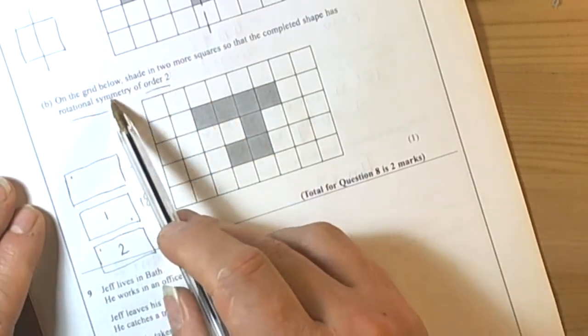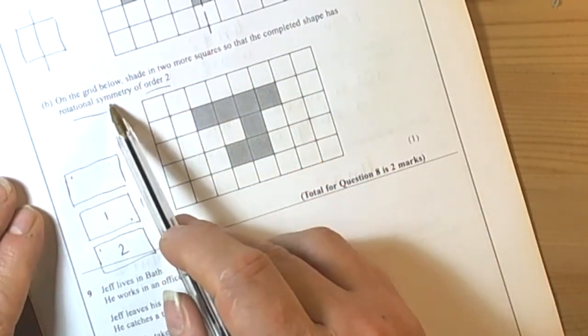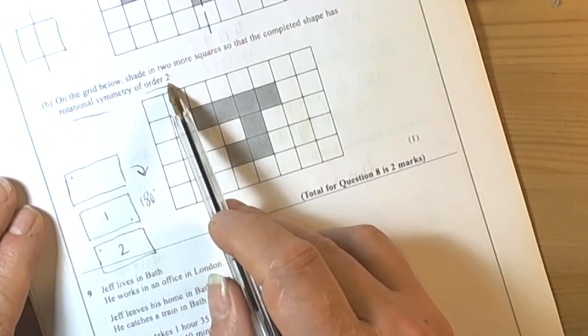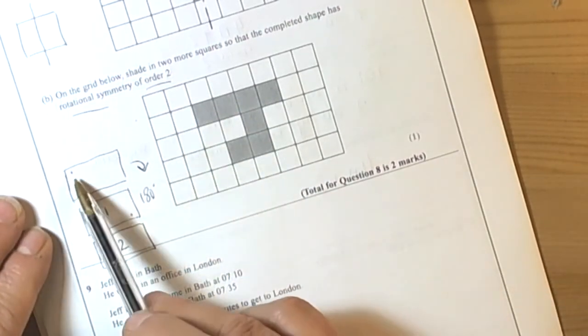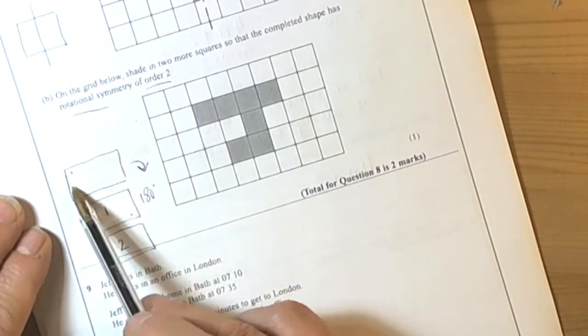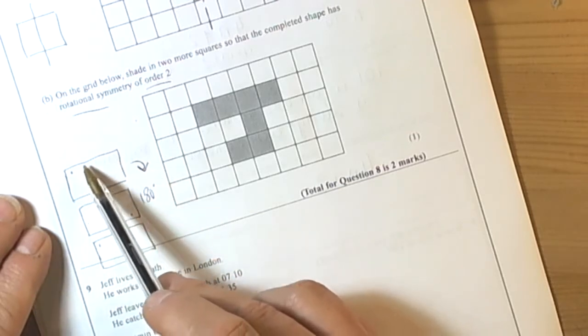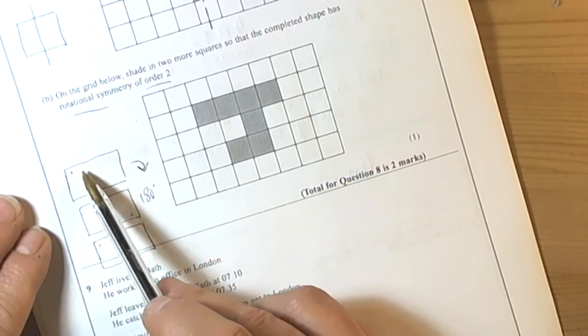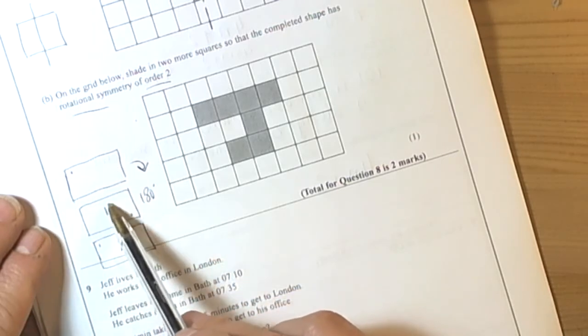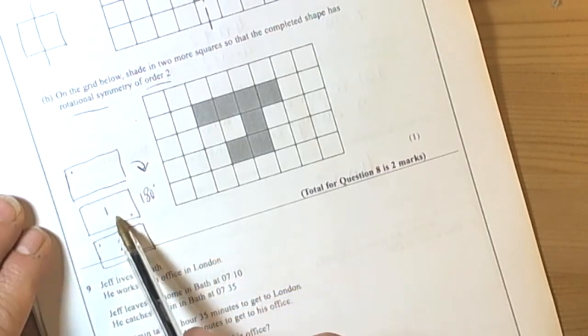The next one is asking us to shade in two squares to make a shape with order of rotational symmetry 2. What we need to remember about order of rotational symmetry is, if we give an example of a rectangle, we look at how many times it spins through a full turn of 360 degrees and all the times that it looks the same, then we keep counting up. So a rectangle upside down once, back to the same twice, so it has order of rotational symmetry 2.